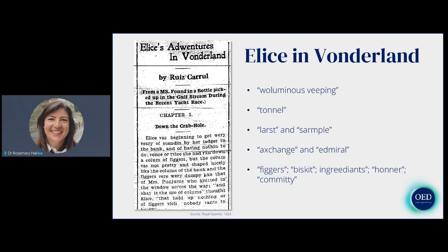You can see another example of this in what you're looking at here: a serialized publication of a parody in Bermudian dialect — a written parody of Alice in Wonderland — from the summer of 1924, published in the Royal Gazette. It's an extraordinary piece of writing. In the title and in phrases like voluminous weeping, the W in work is parodied — but that's simplifying and not particularly useful evidence for us. But there's more I want to pay attention to: other things going on in this type of written dialect parody.